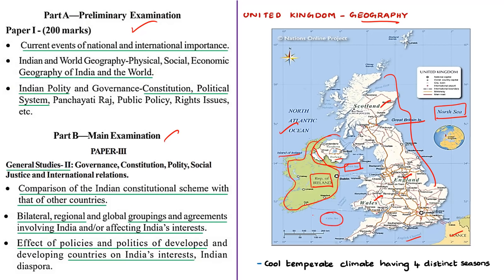The North Channel separates the island of Great Britain from the island of Ireland. The United Kingdom experiences a cool temperate climate with four distinct seasons: winter, spring, summer, and autumn.